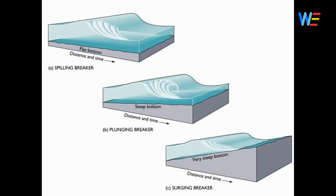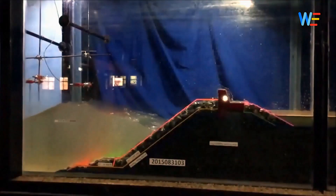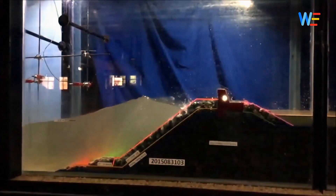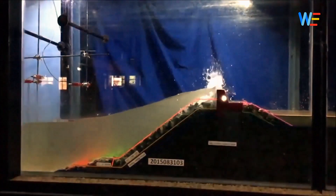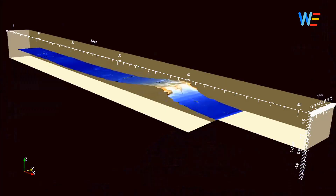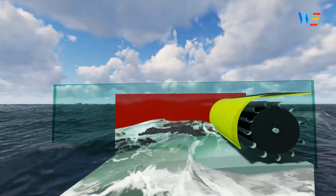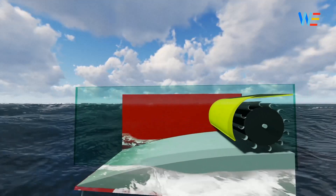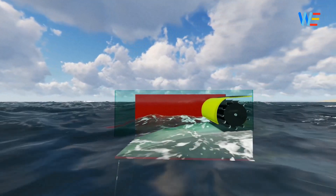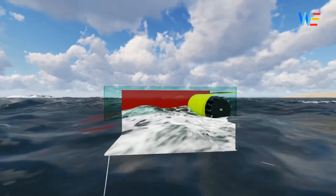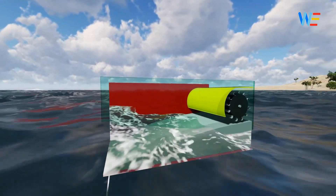Waves break in different patterns depending on different slope angles. Surge type wave breaking provides most of the kinetic energy of flowing water. WaveMill has an optimum ramp slope to make sea waves break into surge type.